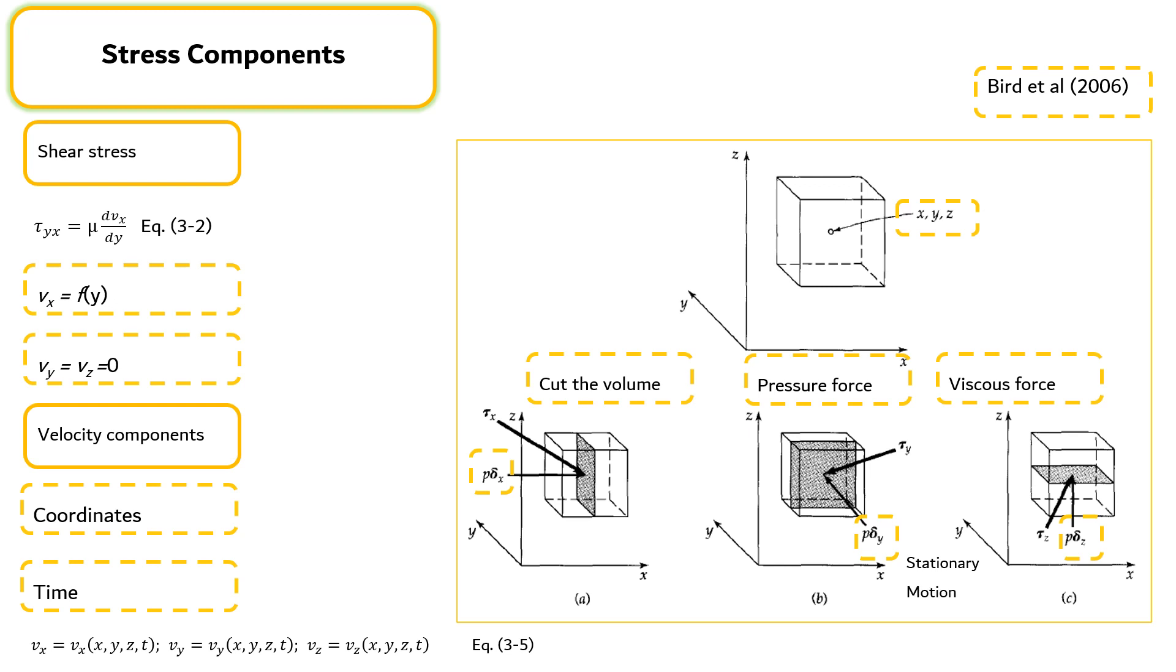The viscous forces come into play only when there are velocity gradients within the fluid. In general, they are neither perpendicular to the surface element nor parallel to it, but rather at some angle to the surface. In Figure A, we see a force per unit area tau_x exerted on the shaded area, and in Figure B and Figure C, we see forces per unit area tau_y and tau_z.